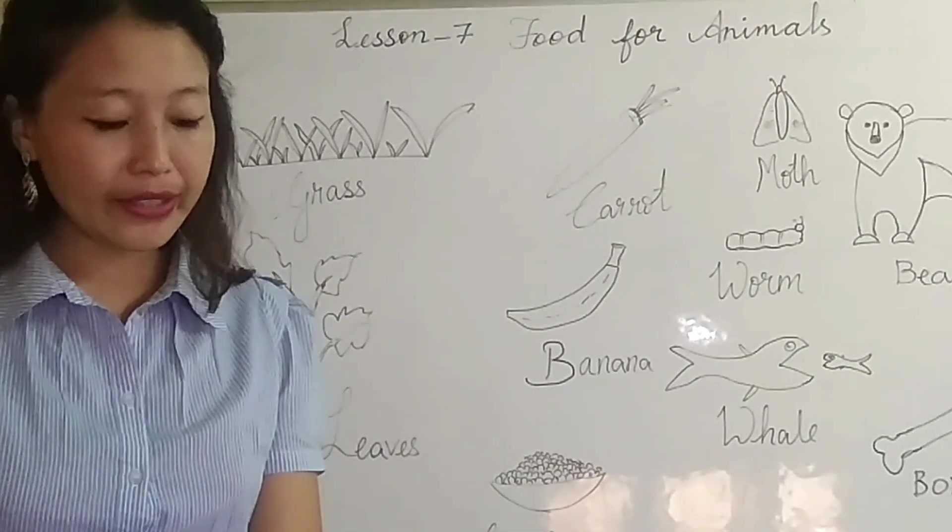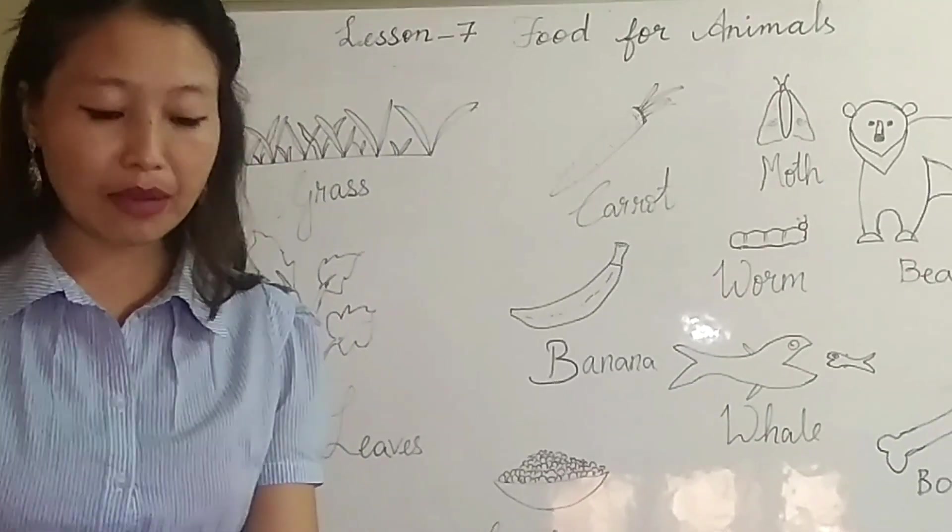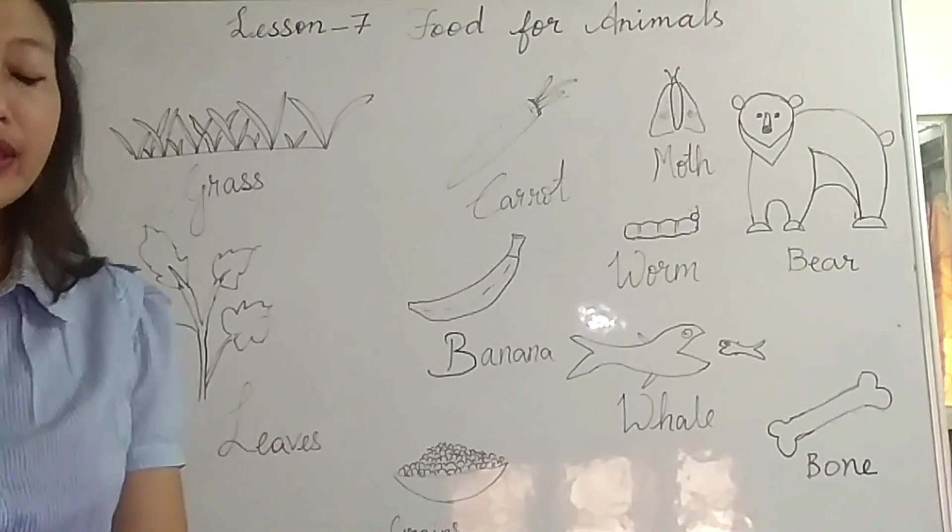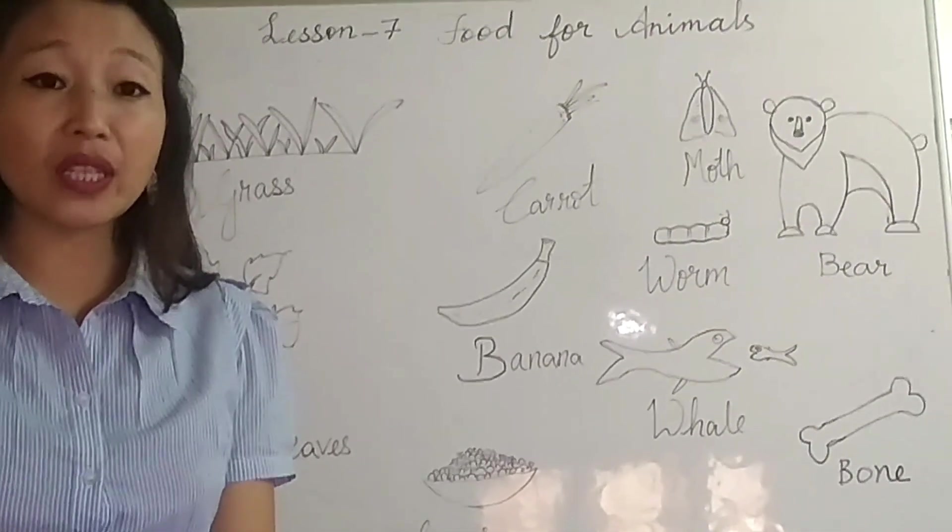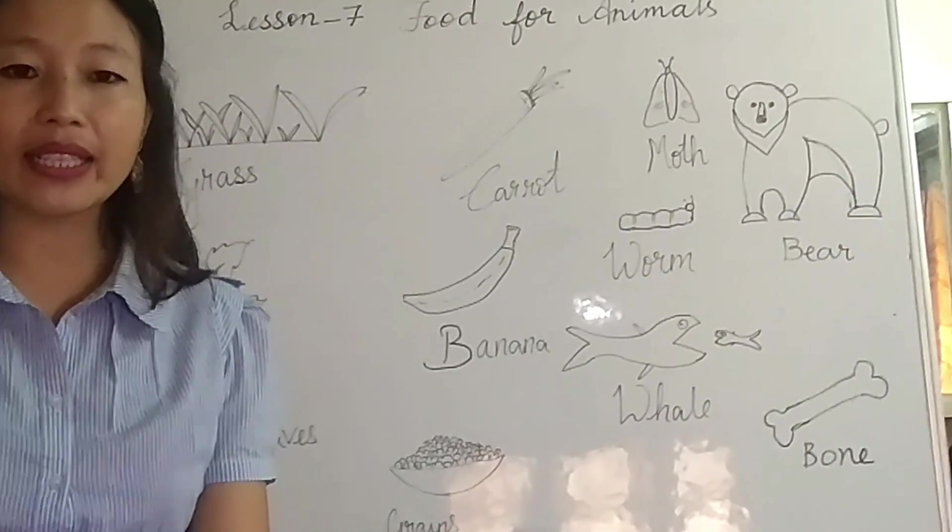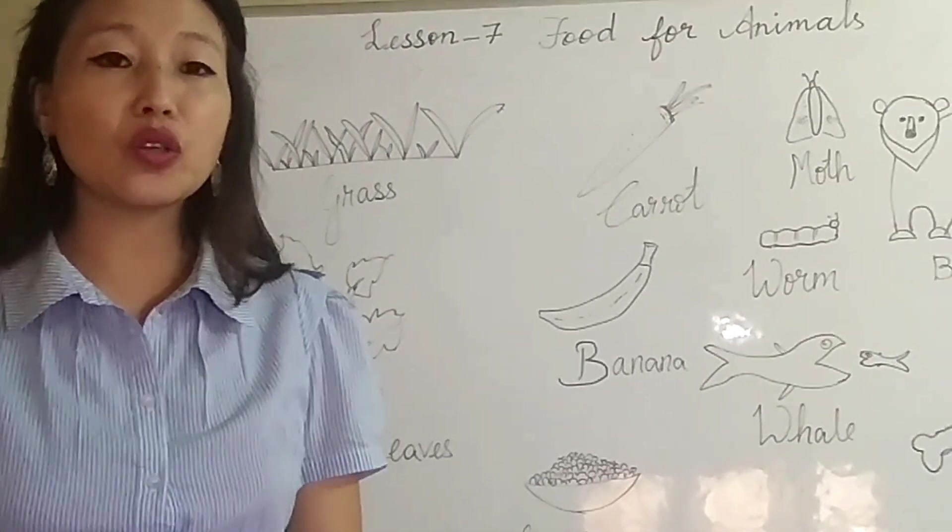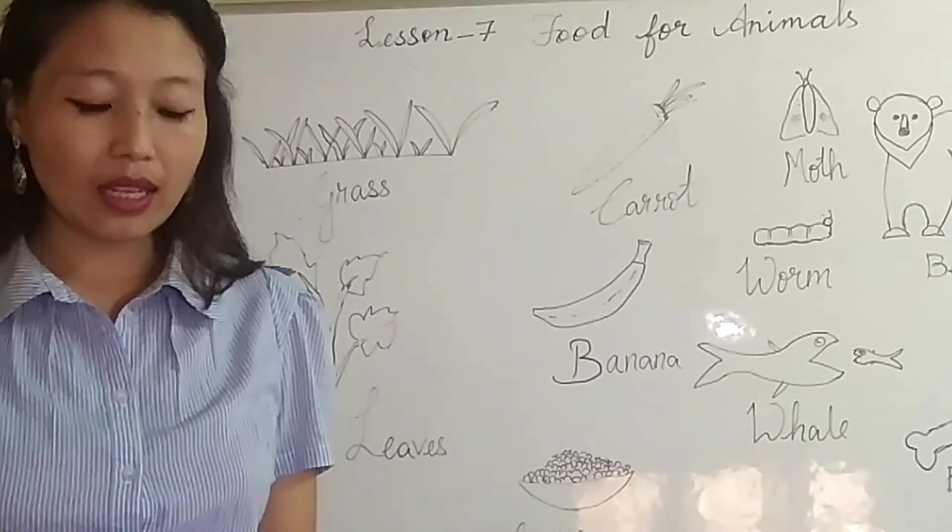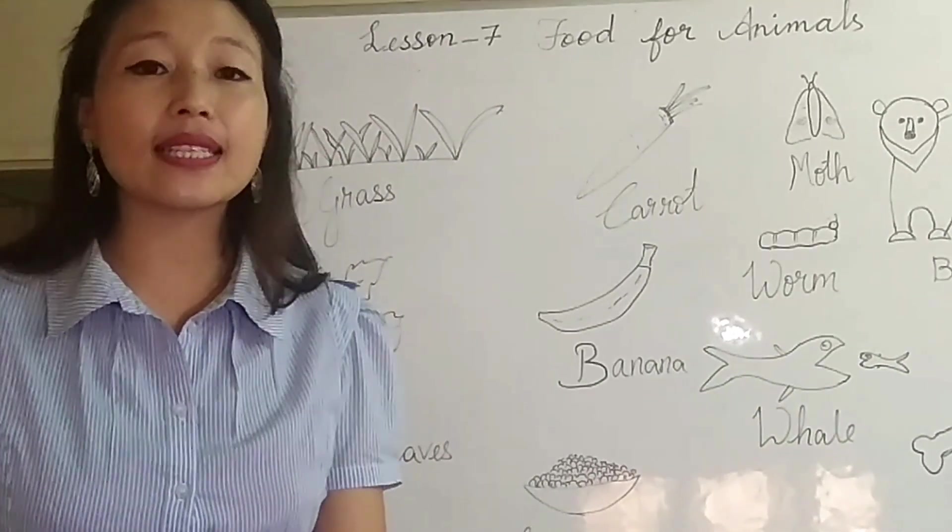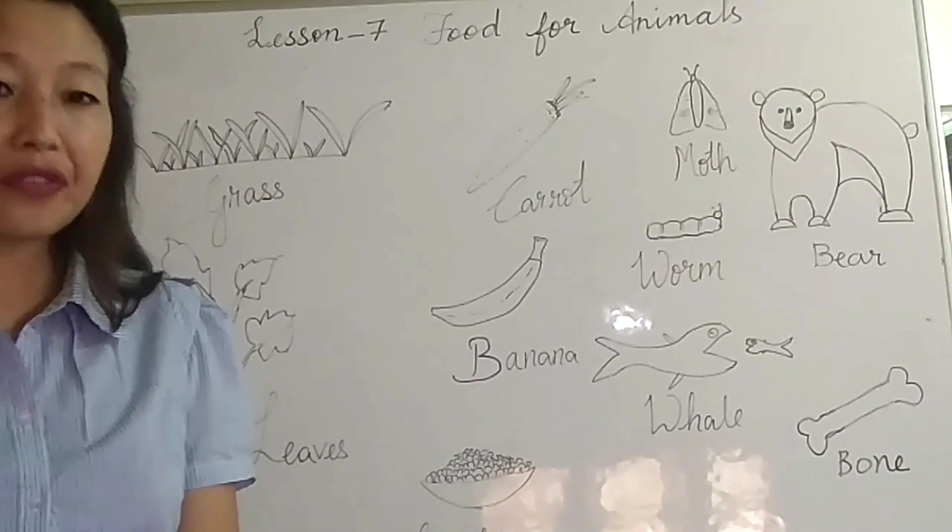Now we will learn how some animals eat both plants and animals as their food. For example, look over here, a bear eats both plants and fishes by catching them as its food. Another interesting example is you all might have a pet dog or puppies at home, so you know very well how it enjoys eating bread or various kinds of food, and at the same time it also enjoys eating bones or meat that you feed them.